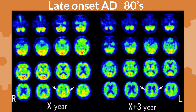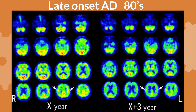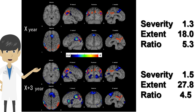In a longitudinal SPECT case of Alzheimer's disease in a patient in his 80s, at year X there is mild hypoperfusion in the left parietal cortex. Three years later, the hypoperfusion has progressed but is less pronounced than in early-onset cases; arrows indicate that perfusion in the bilateral pericentral sulcus cortex is preserved. In EZI, there is a right-dominant decrease in the bilateral parietal cortex at year X, with severity 1.3, extent 18.0%, and ratio 5.3 — above threshold but lower than early-onset Alzheimer's disease. Three years later, progressive decrease in the bilateral temporoparietal and frontal cortex was seen; severity and extent were mildly increased but ratio decreased.